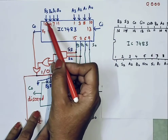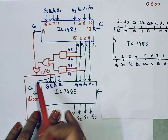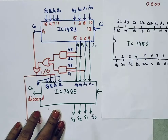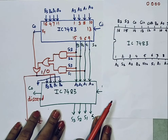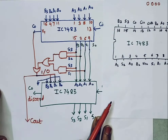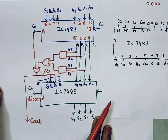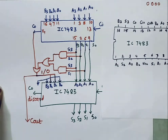In this way we can implement a BCD adder circuit using binary adder IC 7483. Thank you so much for watching.